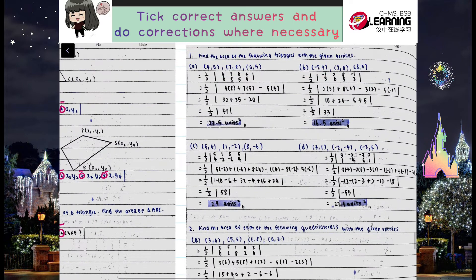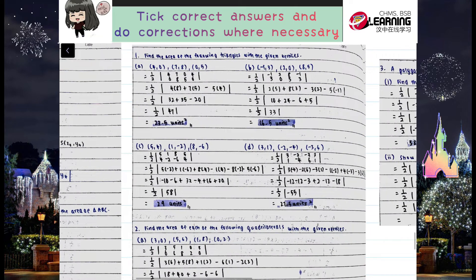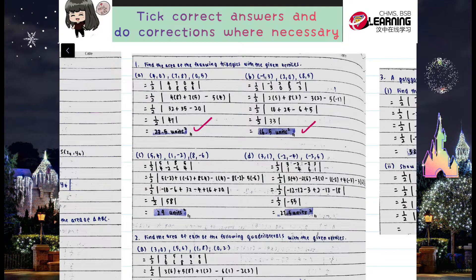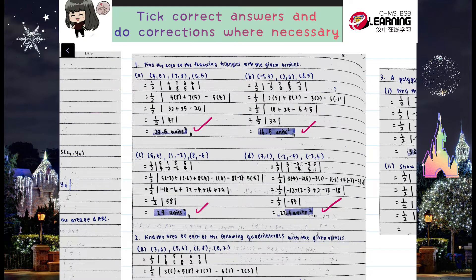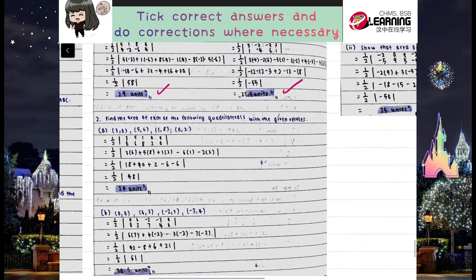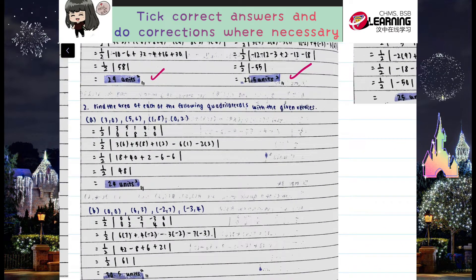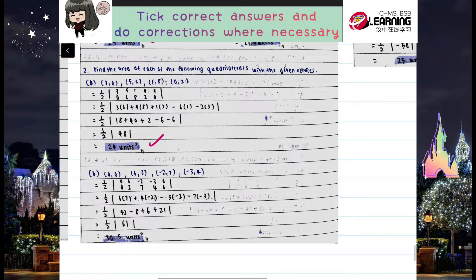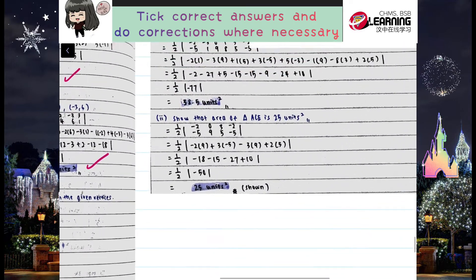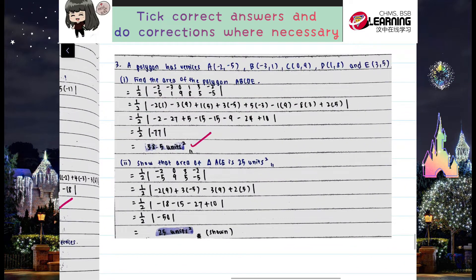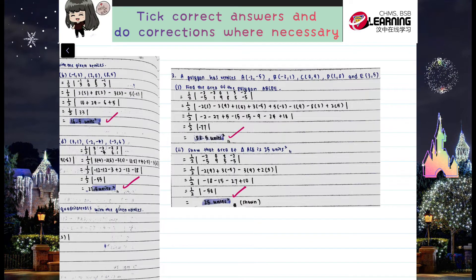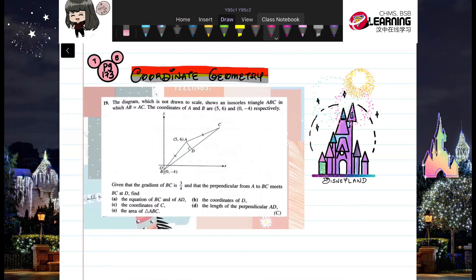Number 1a is correct at 16.5, with correct working. Then 29 units and 27.5 units — most of your work here is correct. Well done on this subtopic. 30.5, 38.5 units, and 25 units — please double check your work.